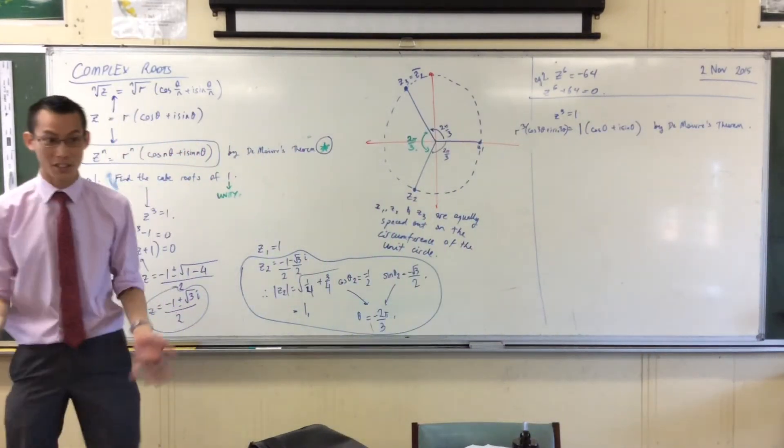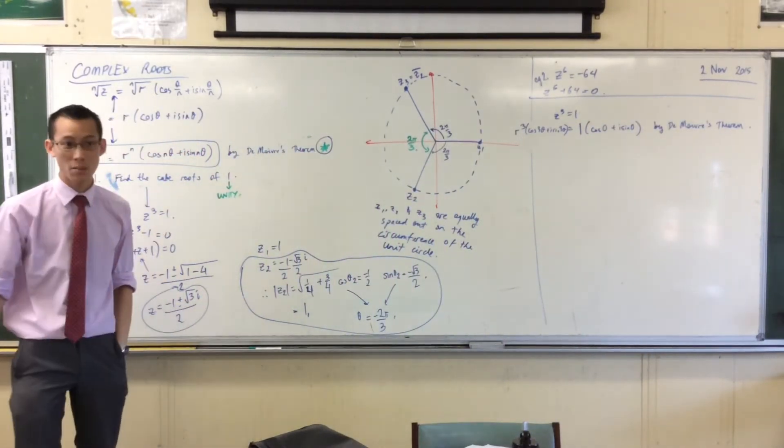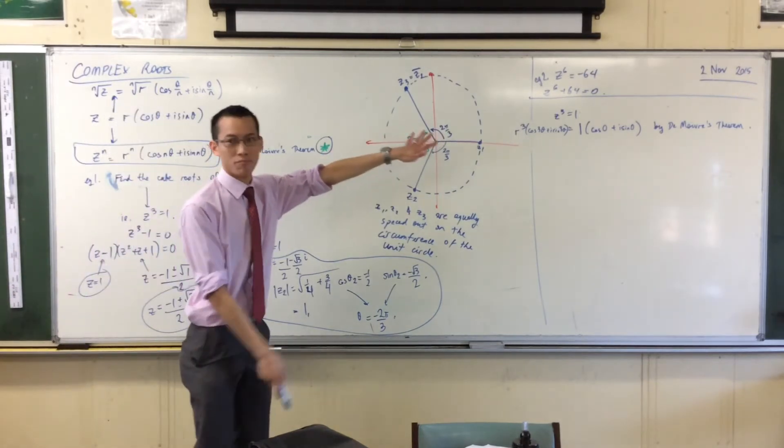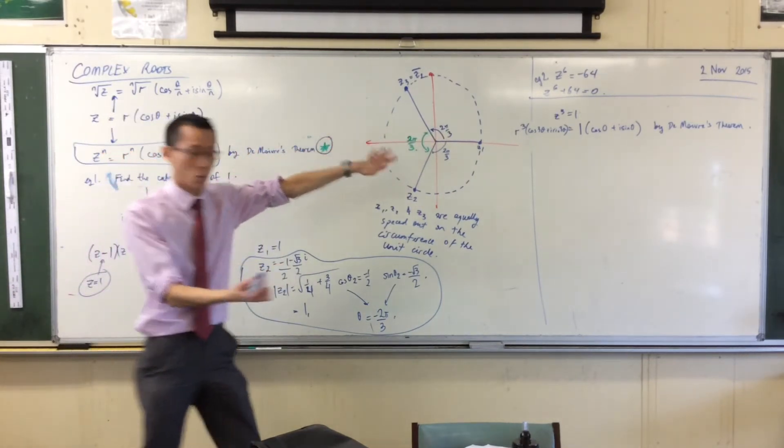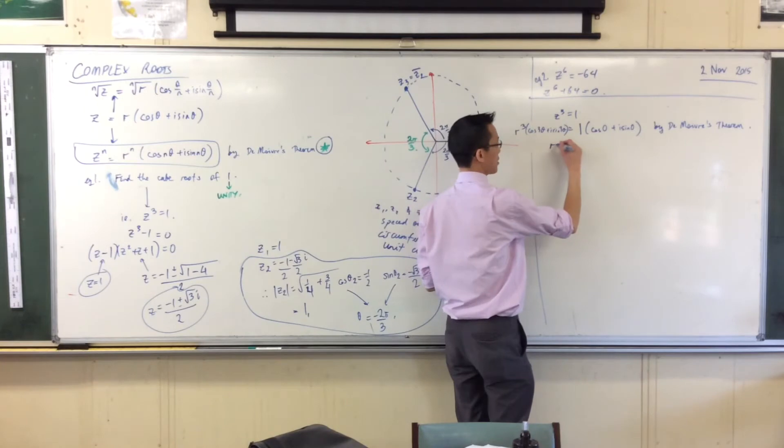First step, we're always trying to get the modulus first because the rest depends on the modulus. In this case you've already done this, so you know the modulus is going to equal 1. So r equals 1.